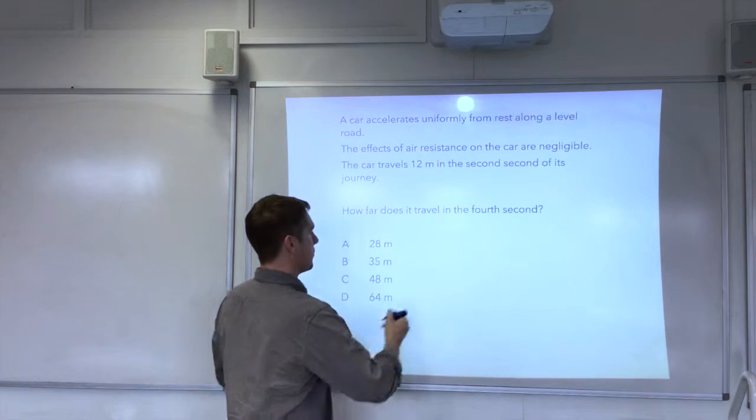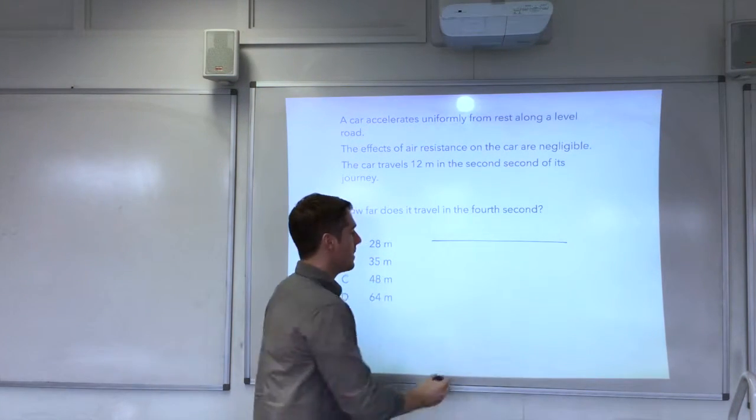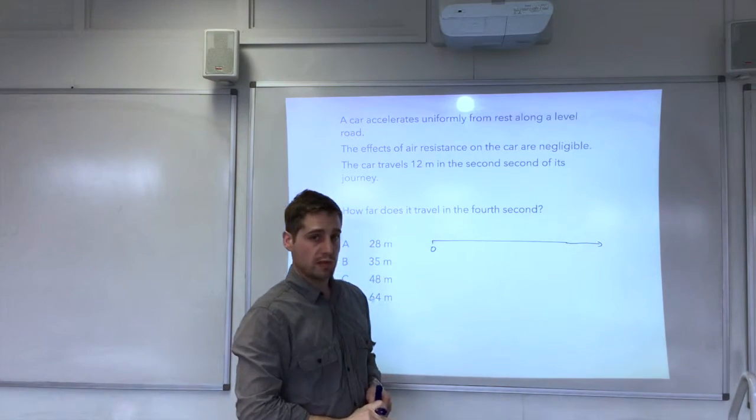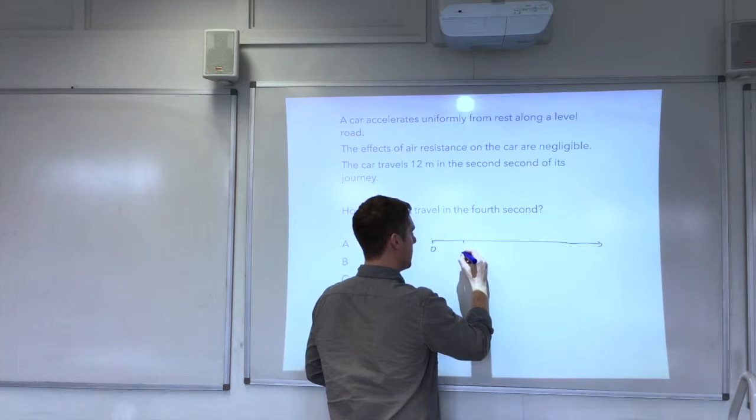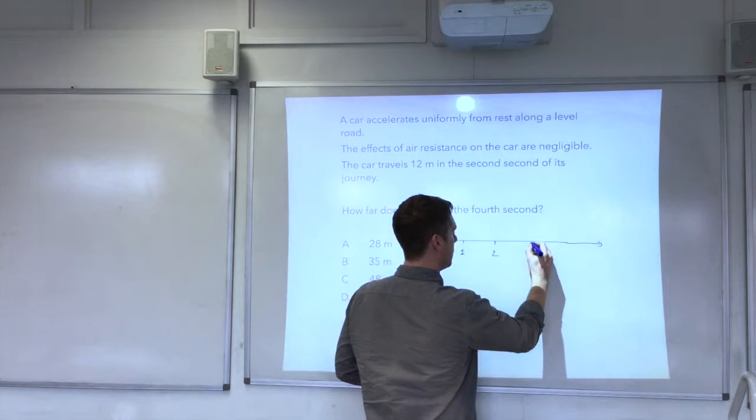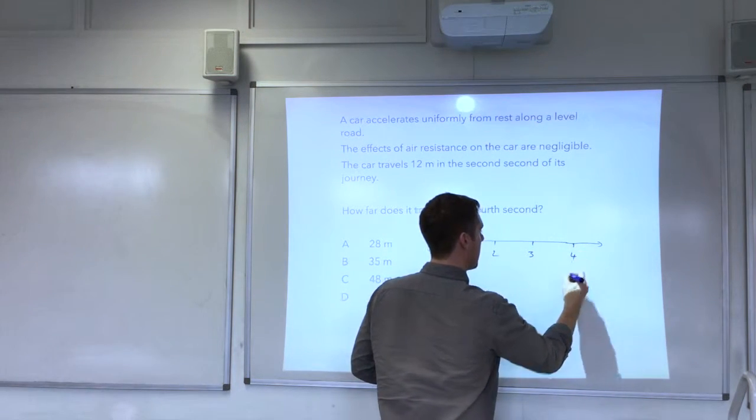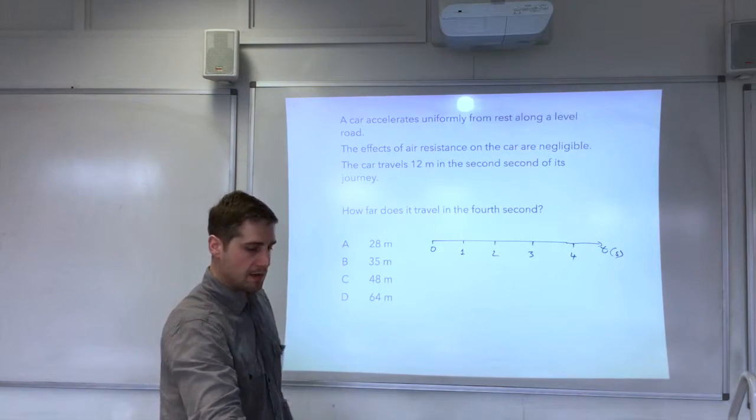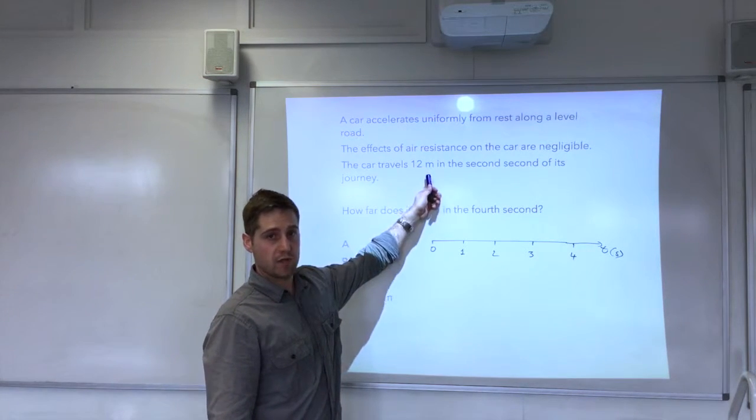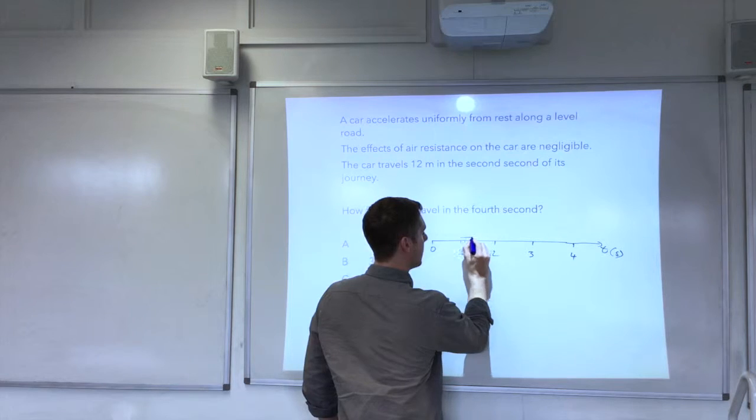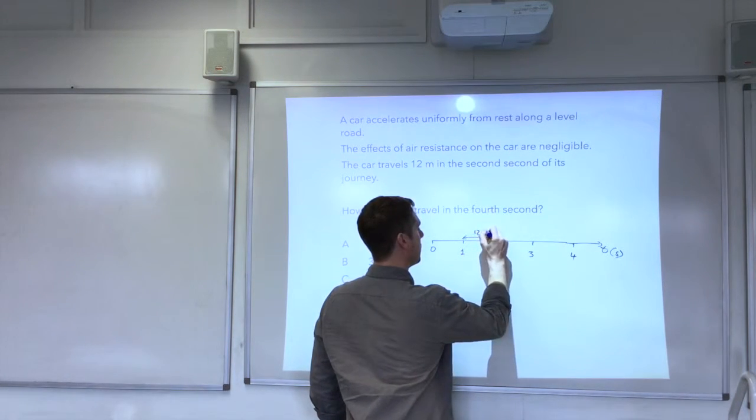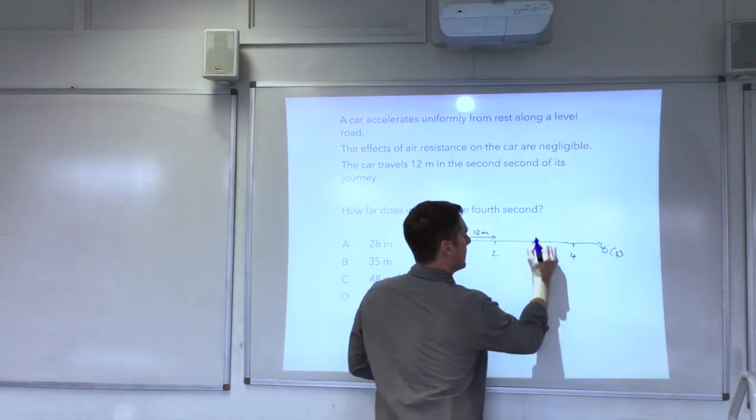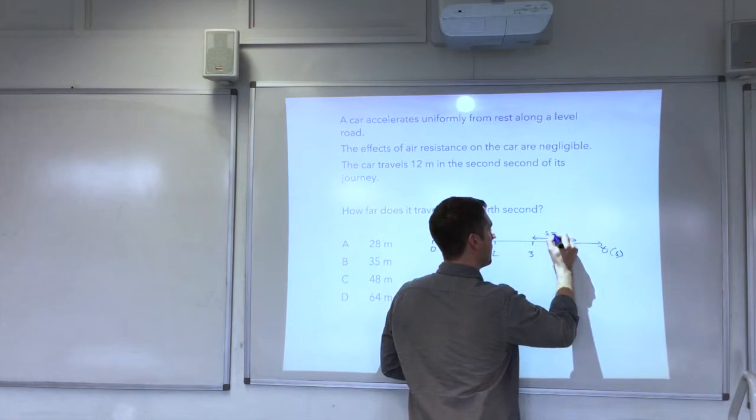What I did was draw a timeline to represent the car's journey over the first four seconds. So we've got 0 there, 1, 2, 3 and 4. This is t here in seconds. The question tells us that in the second second it travels 12 metres. So we know that the distance here is 12 metres. And we want to know what this distance is here.